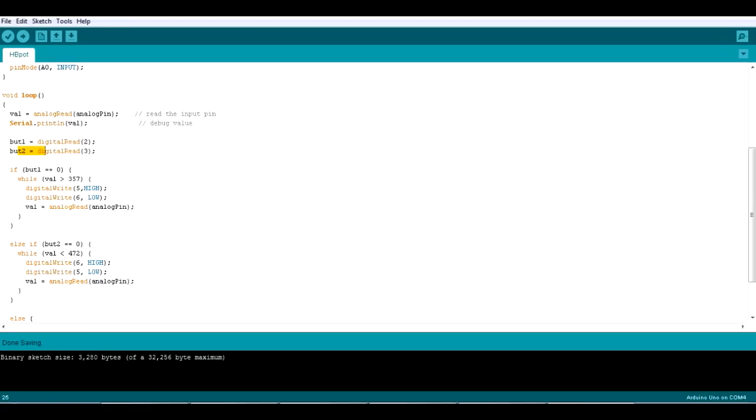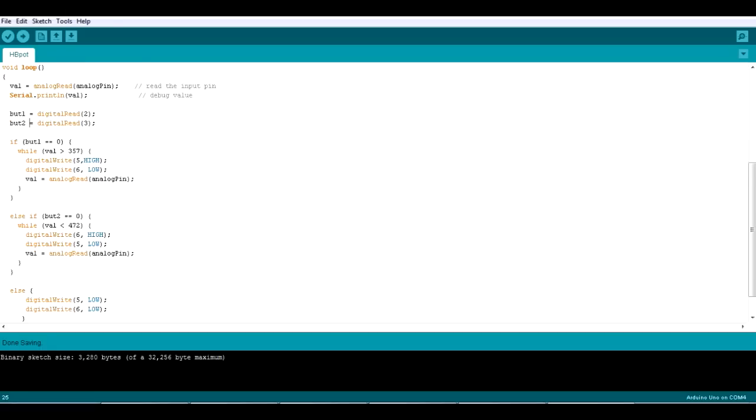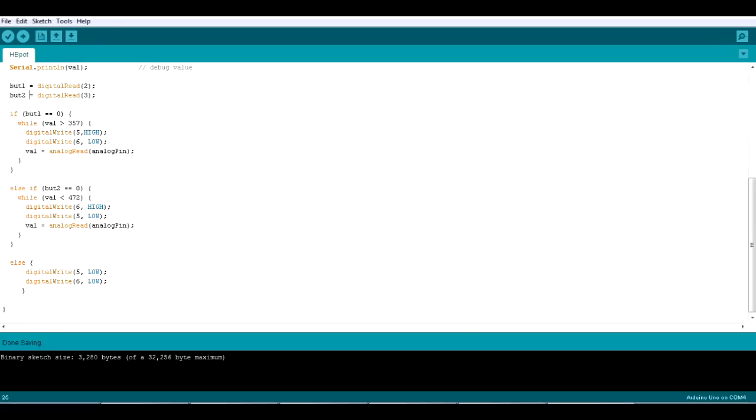And the rest of the loop is pretty simple. I'm just saying that if one of the buttons is pressed, if but one is zero, then while the value is bigger than the lowest point, which I looked at that debug terminal to see what it was and it was 357, then write one of the pins high and the other one low. And that makes the L298 turn the motor in one direction. On each of these while loops, we need to read the value so we can actually see what it is. So the while loop knows what it is, so it can keep doing that while it's a certain value. If the other button is pressed, it does the other thing. So it basically sees if it's smaller than the highest value, which is 472 and writes the other pin high.